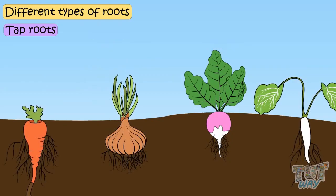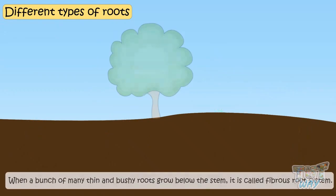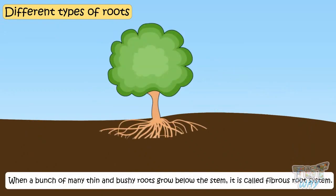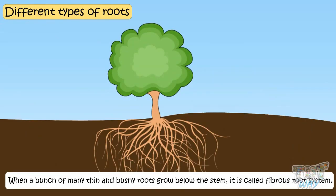Tap roots store food in them and we eat these roots. When a bunch of many thin and bushy roots grow below the stem, it is called fibrous root system. These thin and bushy roots are nearly equal in size.